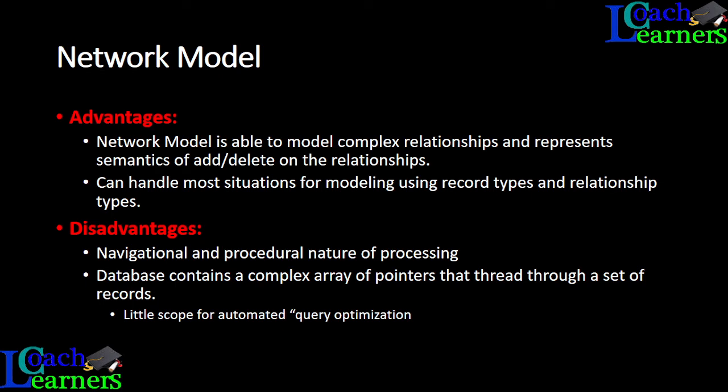The network model's advantages include the ability to model complex relationships and represent semantics — you can add and delete relationships. It can handle most modeling situations using record types and relationship types. The disadvantages include the navigational and procedural nature of processing, which is very cumbersome, and it contains a complex array of pointers that must be read through a set of records.